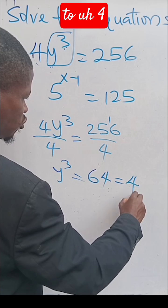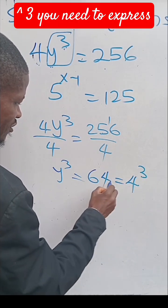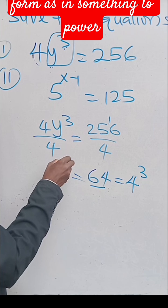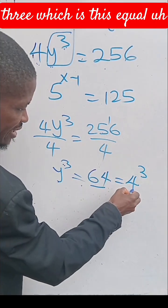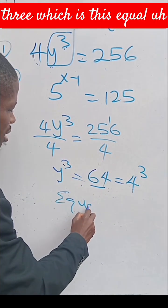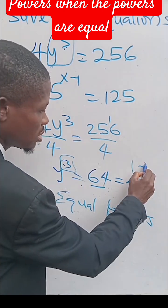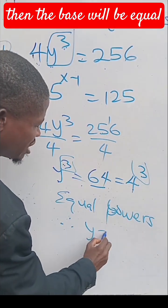This equals 4³. You need to express this 64 in the form of something to power 3. When the powers are equal, then the bases will be equal to each other.